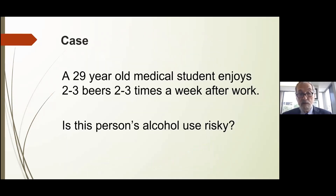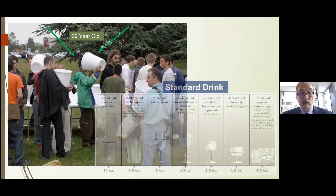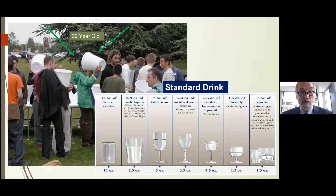We'll start with screening, and as we often do in medicine, we'll start with a case. A 29-year-old medical student enjoys two to three beers, two to three times a week after work. Is this person's alcohol use risky? The answer is: it depends. One thing it depends on is what constitutes a standard drink. One 12-ounce beer is the same alcohol content as one jigger of spirits or a glass of wine — those are all standard drinks.